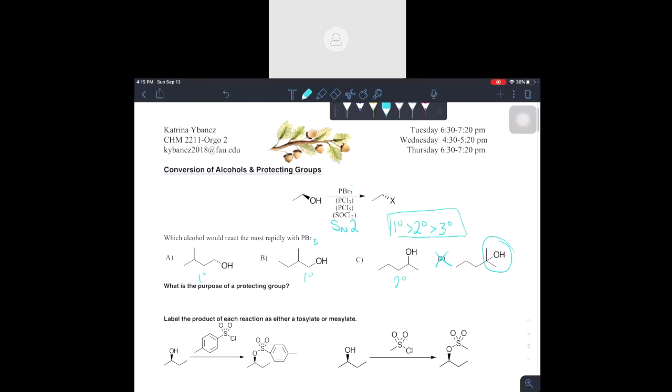Remember primary first, secondary then tertiary, so secondary is out of here. The difference between A and B, take a look at it. One of them has the methyl group closer to it and the other has a methyl group further away.